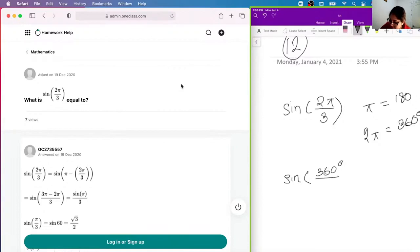over 3, over and divided by 3, which will be 360 divided by 3, which is equal to 120 degrees. Right?